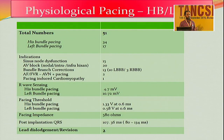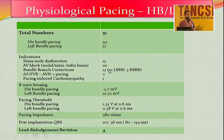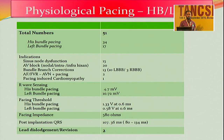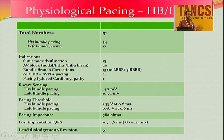Bundle branch block correction is a new application because many of our Indian patients cannot afford a so-called BiV pacemaker. In that case, we can use a dual-chamber pacemaker — all we have to do is replace the RV lead with a His bundle lead and pace either the His bundle or the left bundle to correct the bundle branch block. I've done around 13 bundle branch block corrections — 10 were LBBB and 3 were RBBB. CRT correction of RBBB is not good, as even the guidelines indicate, but His bundle pacing helps overcome that limitation.